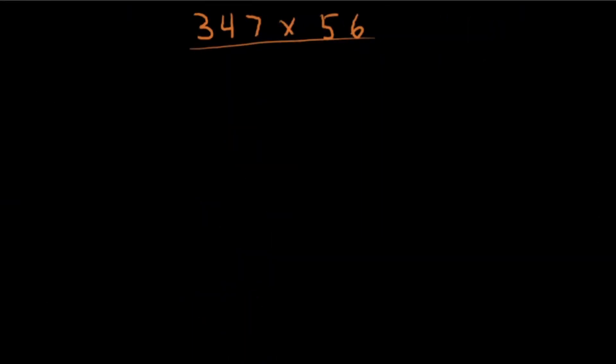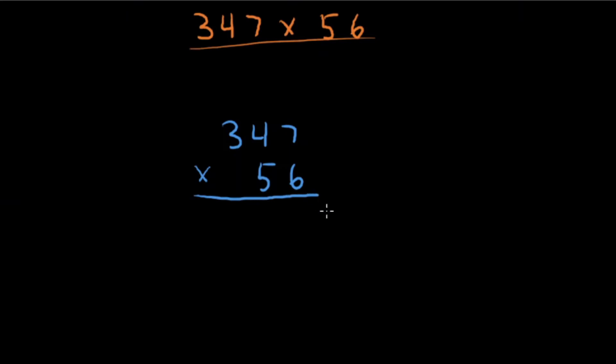All right, second problem. Let's go through this one. The second problem I have for us today is 347 times 56. I'm going to set this problem up just like I did in the last one using the standard algorithm. It's kind of a large multiplication problem, but if you can learn the steps and figure out the process, you're going to be able to solve these types of problems.